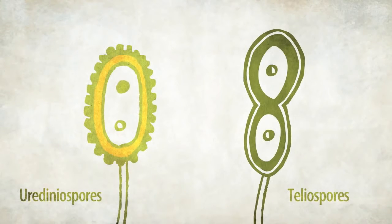And second, it is in the telia spore stage that the two haploid nuclei fuse together, the first step toward creating new genetic variation and possibly new virulence.